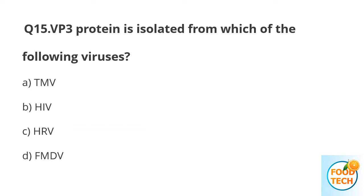Question number 15. VP3 protein is isolated from which of the following viruses? A. TMV. B. HIV. C. HRV. D. FMDV.